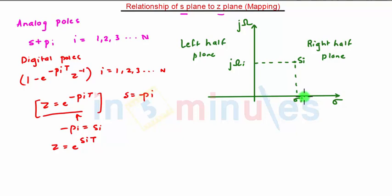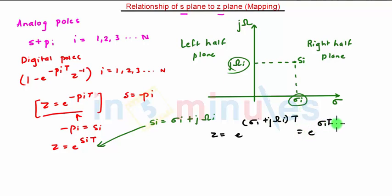Let the coordinates be sigma_i and j*omega_i. Then si = sigma_i + j*omega_i. Substituting in the equation, we get z = e^((sigma_i + j*omega_i)*t). We can expand this as z = e^(sigma_i*t) * e^(j*omega_i*t).